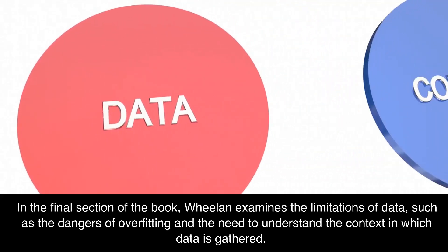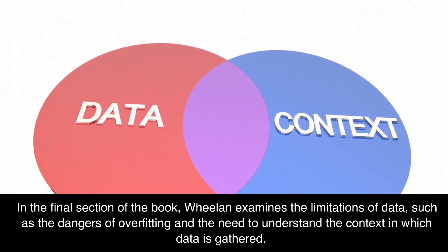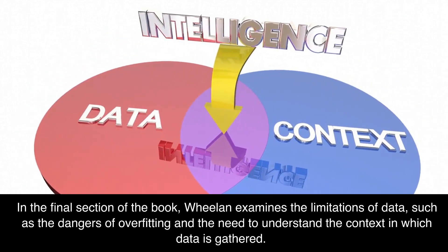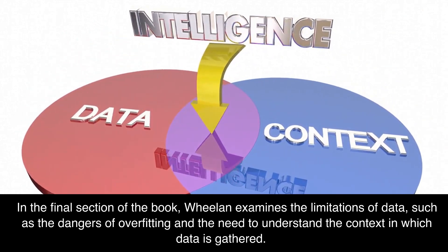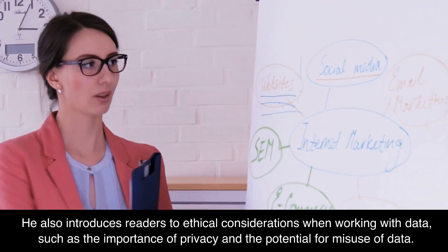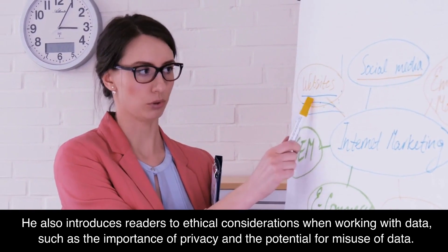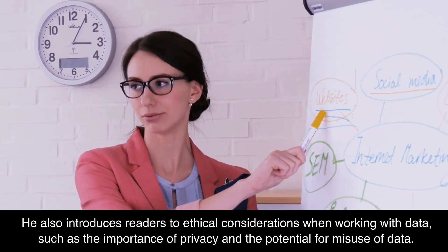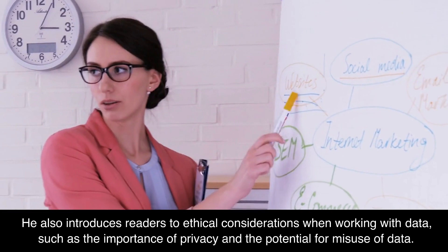In the final section of the book, Wheelan examines the limitations of data, such as the dangers of overfitting and the need to understand the context in which data is gathered. He also introduces readers to ethical considerations when working with data, such as the importance of privacy and the potential for misuse of data.